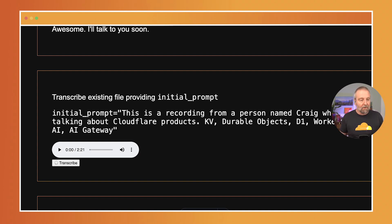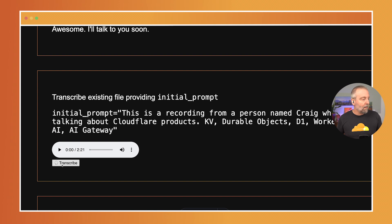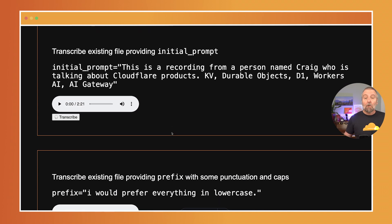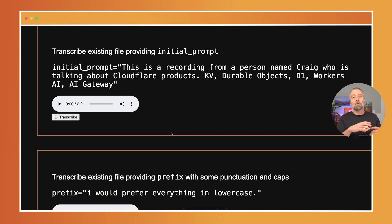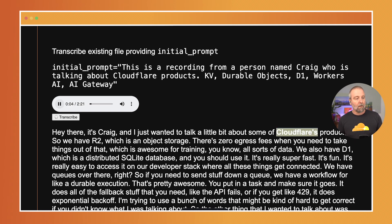So if I scroll down to this next one, what you can do is use this initial prompt. You can make it say 'This is from a person named Craig' so you get their name spelled right — not everybody's name will always be picked up correctly. And I'm talking about Cloudflare products — that's all I said there. If I go ahead and transcribe on that, it will use that information to make the transcription better. This is great if you're using specific terms in a recording. And there you'll see I have 'Cloudflare's products' right there.